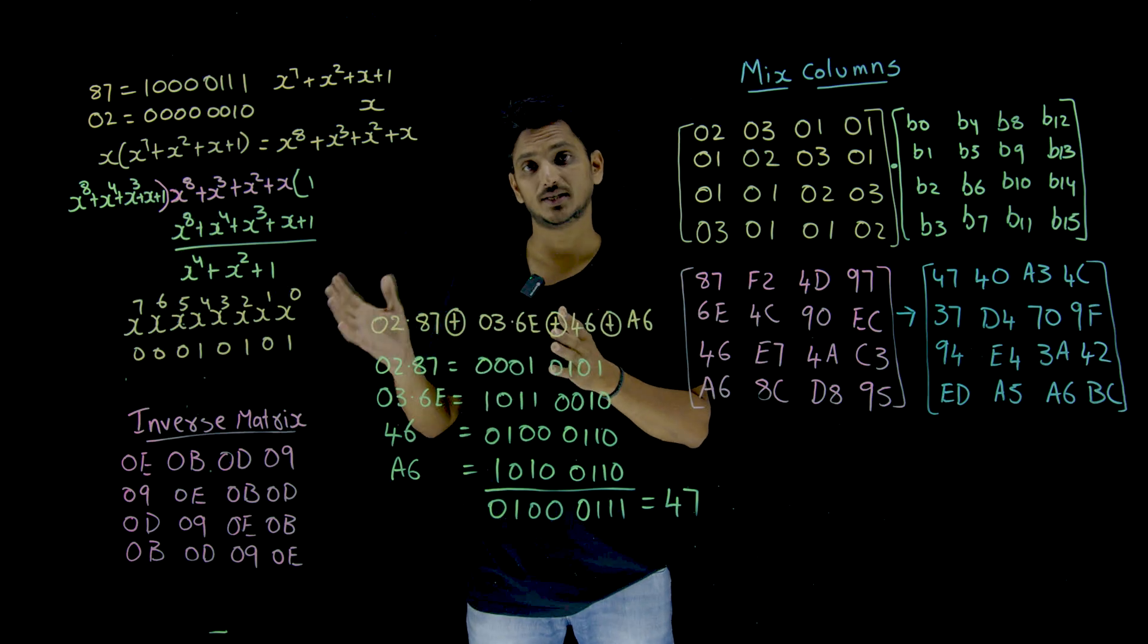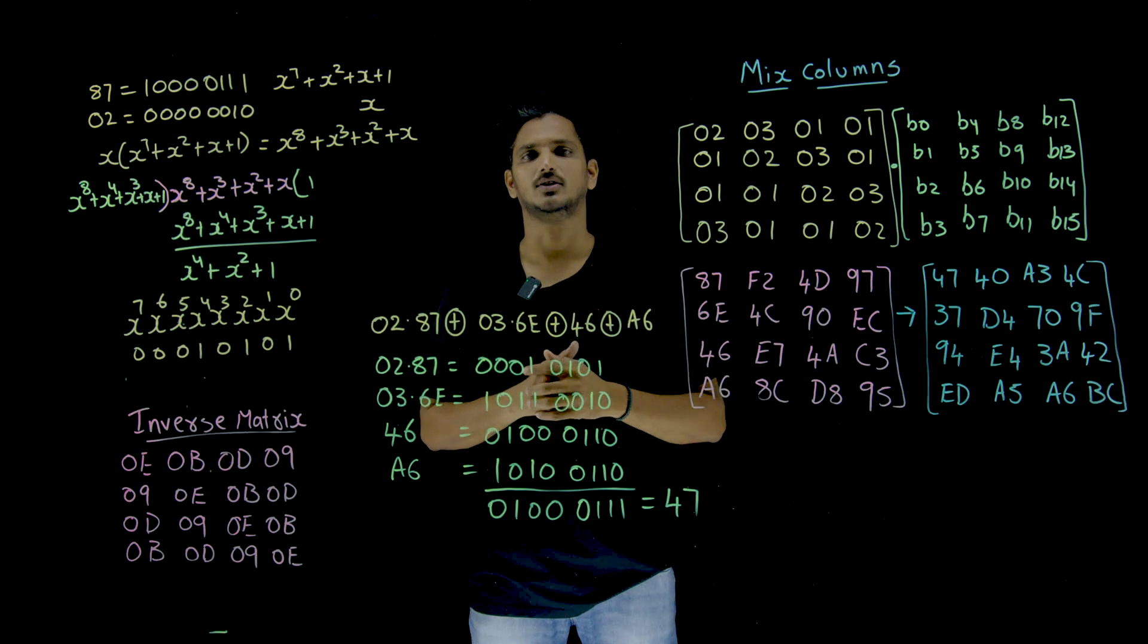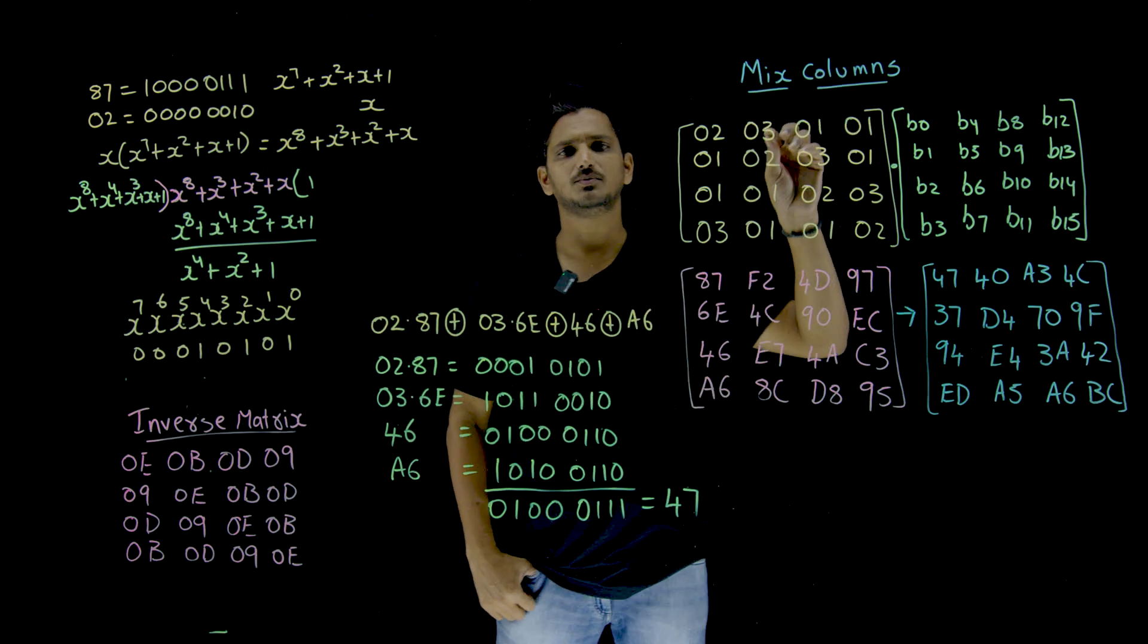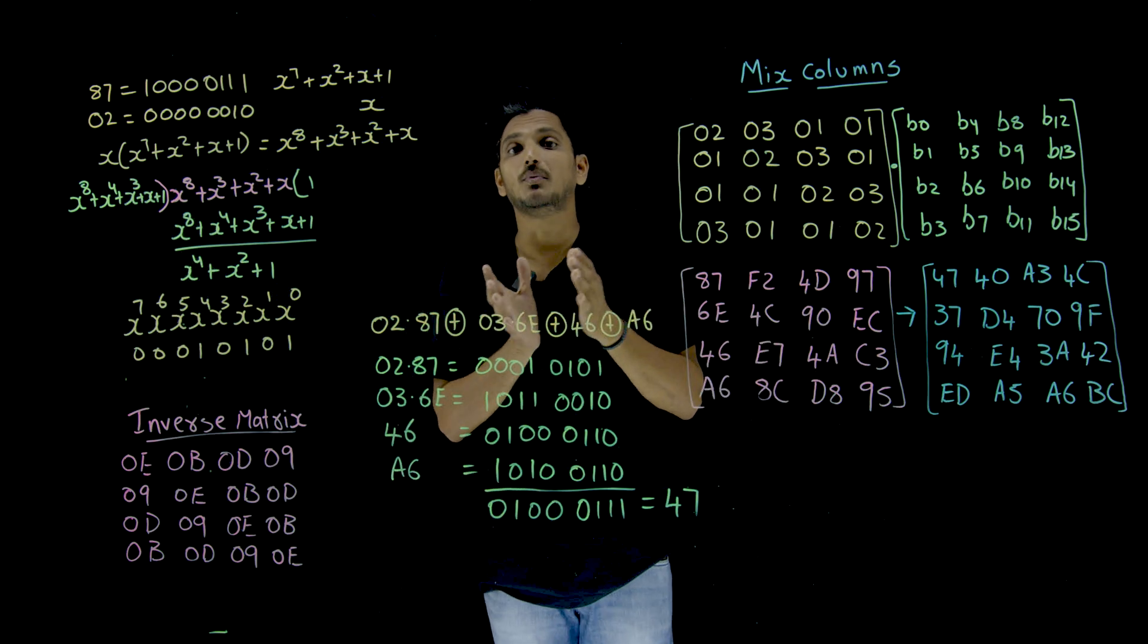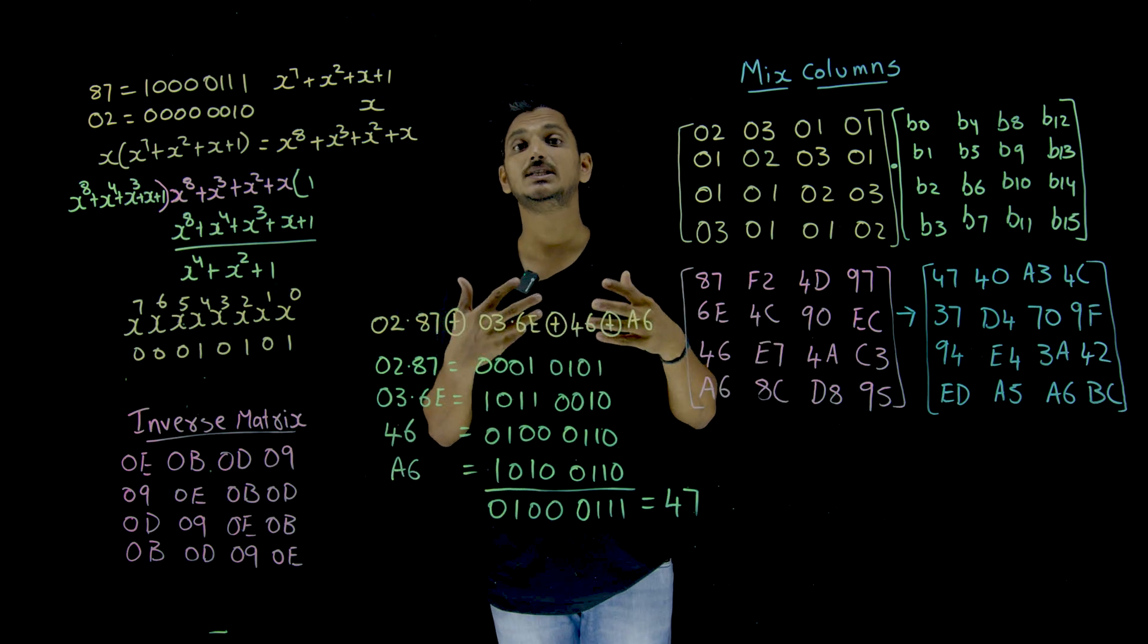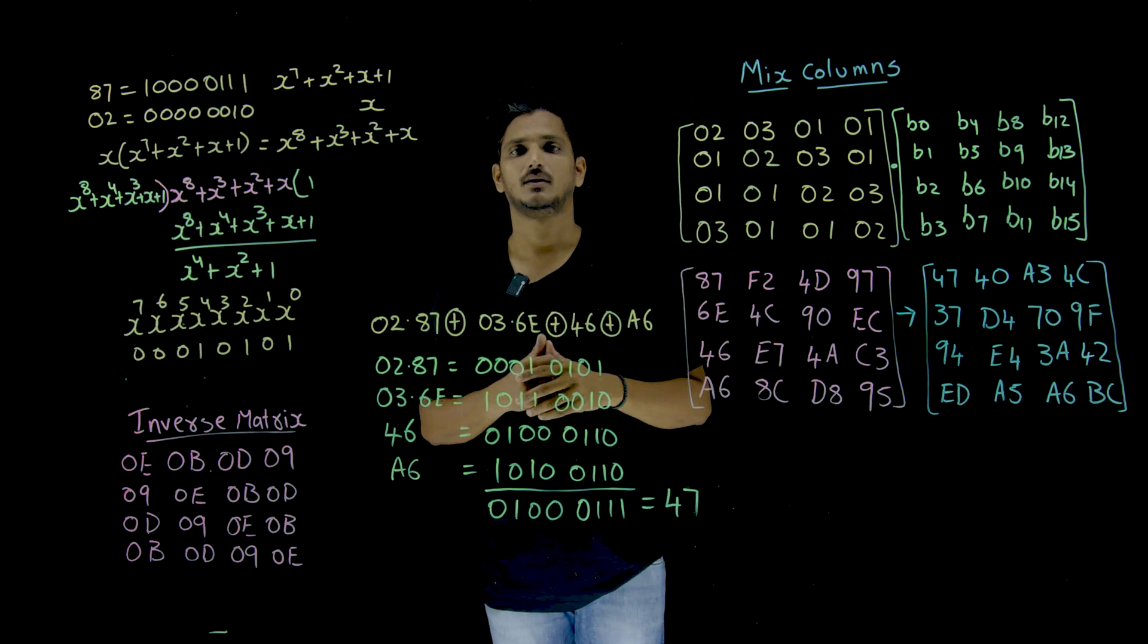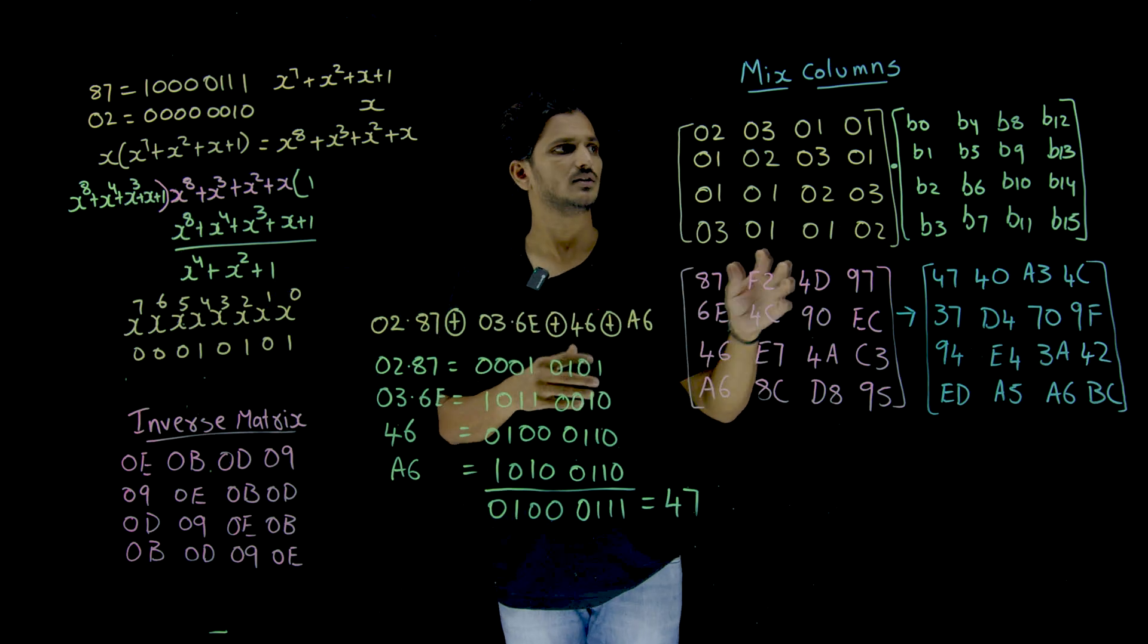First understand the process. At the end you are going to get the idea of how it is providing Confusion and Diffusion. If you have previous basics it is very easy to understand the concept. Now in order to do the Mixed Columns this is done based on the Matrix Multiplication using GF of 2 power 8 multiplication and addition.